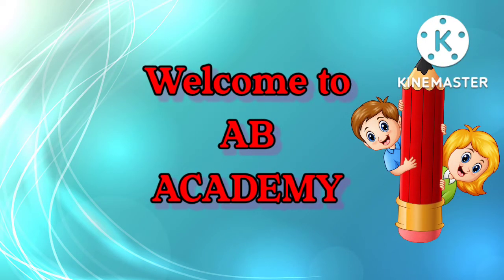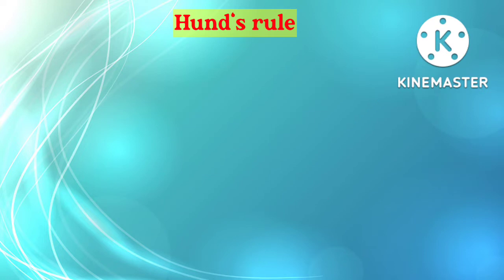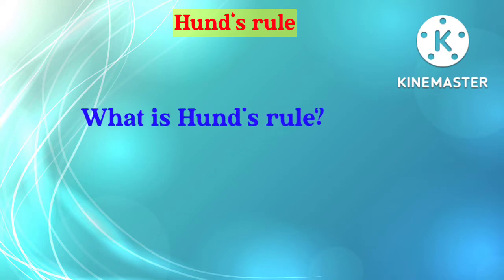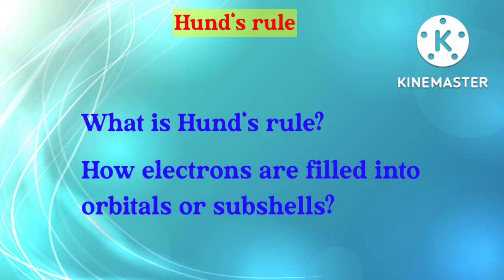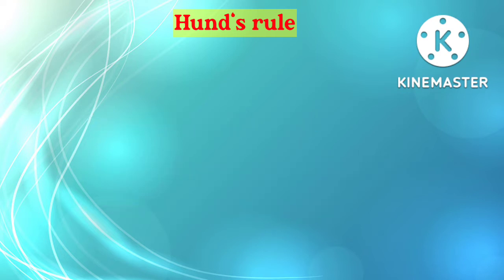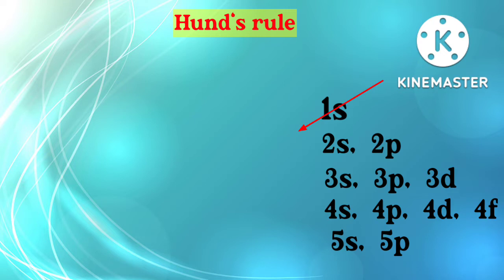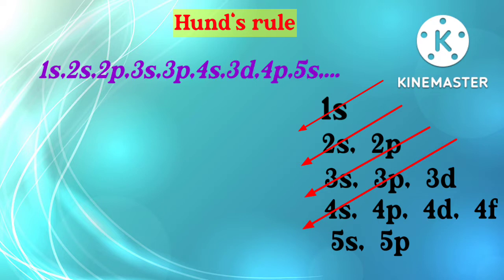Welcome to Abacademe. In this video we will see what is Hund's Rule and how electrons are filled into orbitals. If you have not seen my previous Aufbau Principle video, watching it first will help you understand Hund's Rule. As we know, electrons will first go into the 1s orbital, then 2s, then 2p, 3s, then 3p, 4s, then 3d, 4p, and 5s orbital.